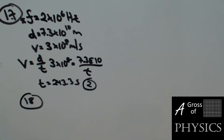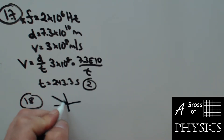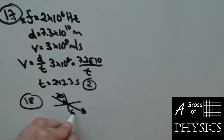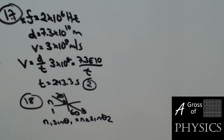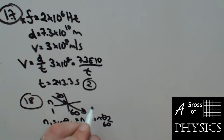Number 18: a light ray travels from a medium with unknown index N into air, going from 30 degrees to 60 degrees. Using Snell's Law: N1 sine theta1 equals N2 sine theta2. N1 is our unknown at 30 degrees, and N2 is air at 1 with 60 degrees. So sine of 60 divided by sine of 30 gives 1.73, which is choice three.